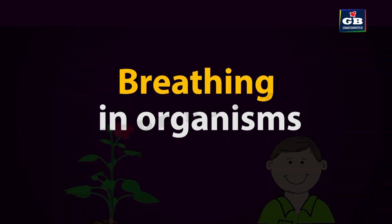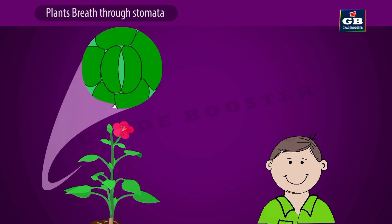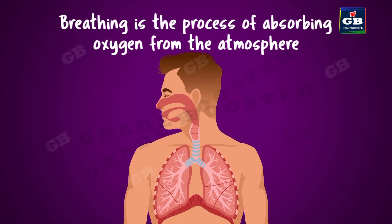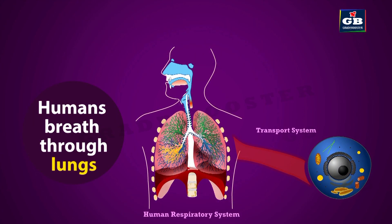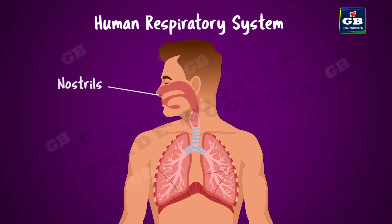Plants have small pores on their leaves called stomata for the exchange of gases. Animals need special respiratory organs for the exchange of gases. Breathing is an important part of respiration — it helps to obtain oxygen from the surroundings. The human respiratory system is well designed to absorb oxygen from the atmosphere.